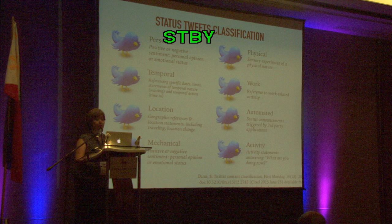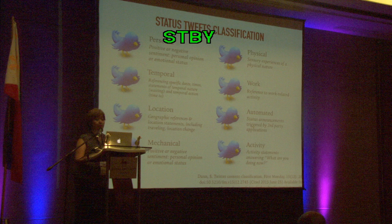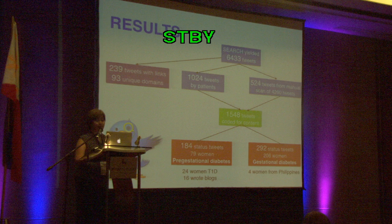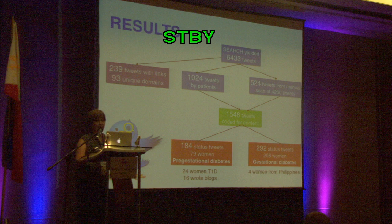Using the seven search strategies, we had 6,433 tweets to begin with. The database identified 1,024 tweets as being from patients. For the remaining tweets — 4,206 pass-along tweets — we found 239 tweets with links showing 93 unique domains.